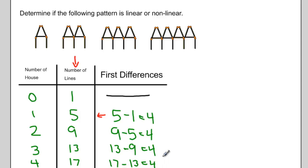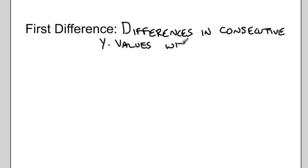We can see that every time I do this, I get the same number in my first difference column. So what are first differences? They are differences in consecutive y values, remember consecutive means in a row, with evenly spaced x values.